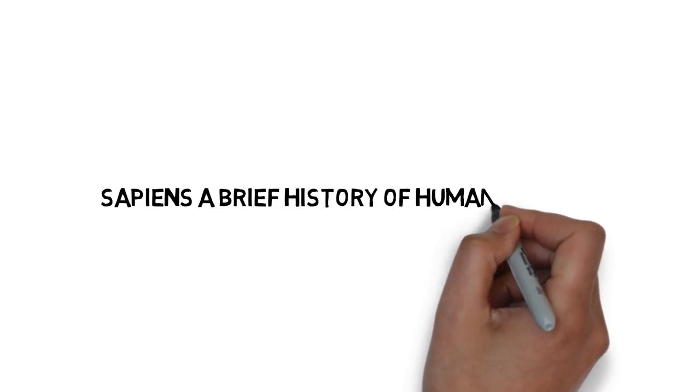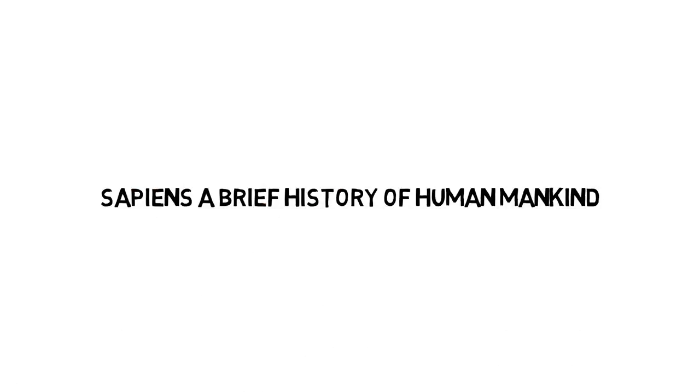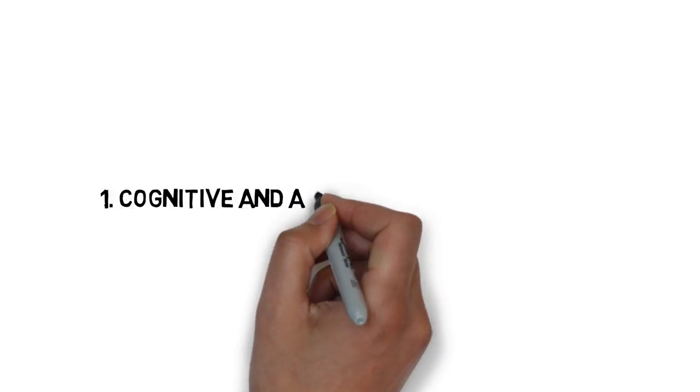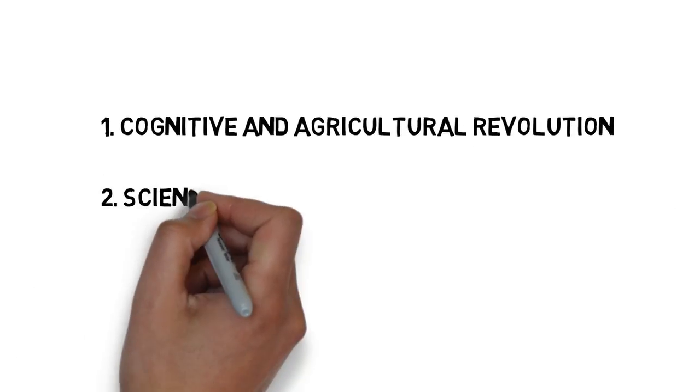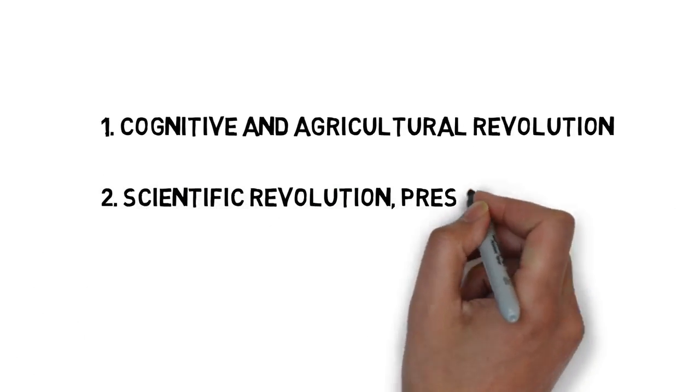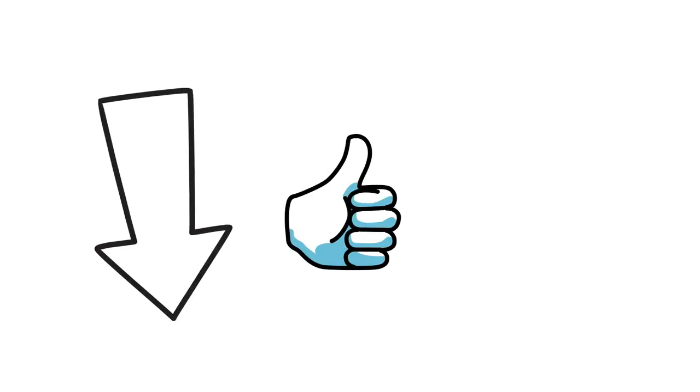This is an animated book review of Sapiens: A Brief History of Humankind. It will be divided in two parts. Part one will include the cognitive revolution and the agricultural revolution. Part two, the scientific revolution, present, and the future. If you like this video, don't forget to leave a thumbs up and be sure to subscribe.